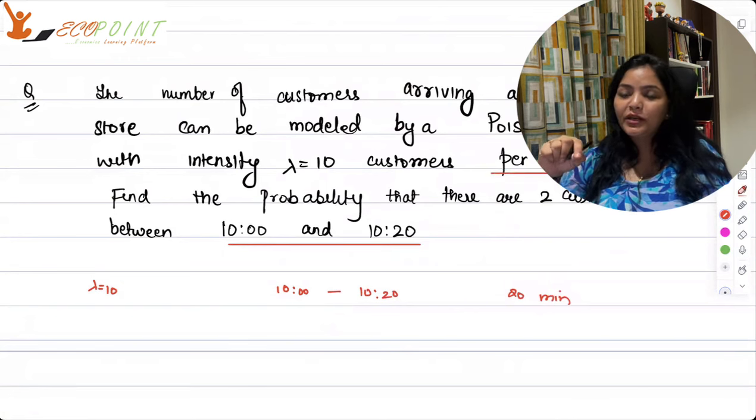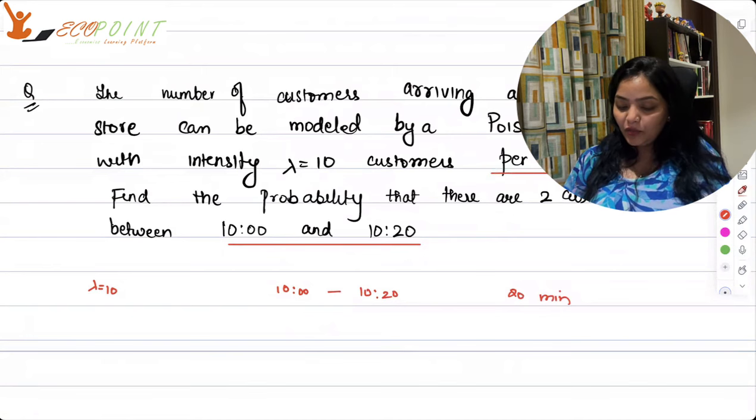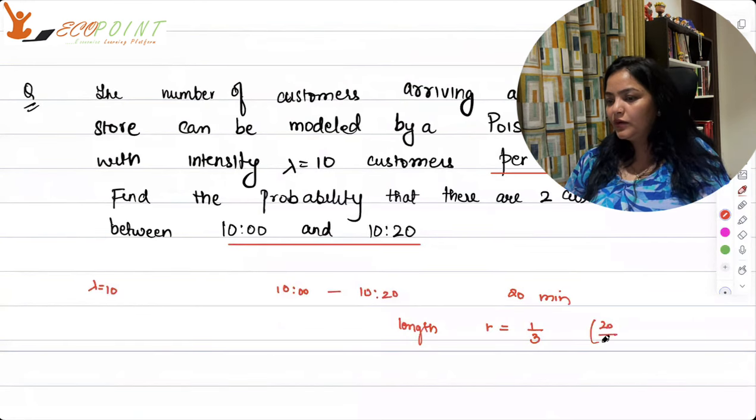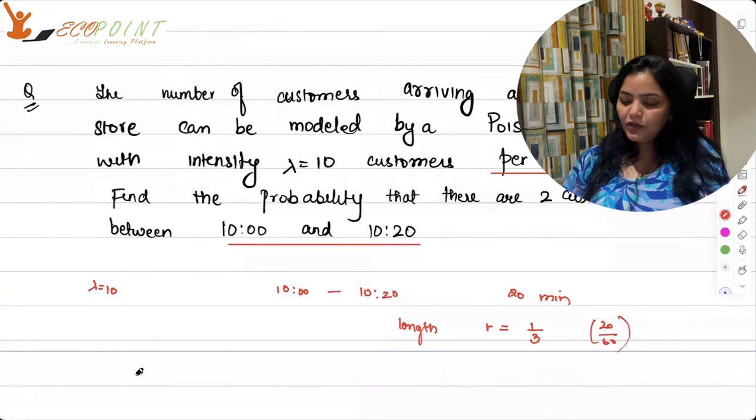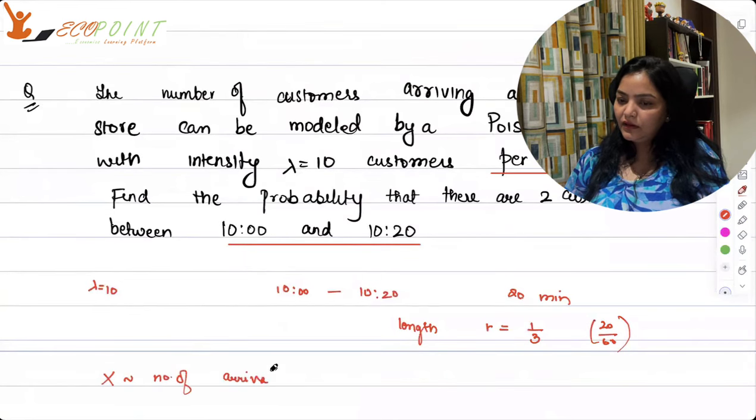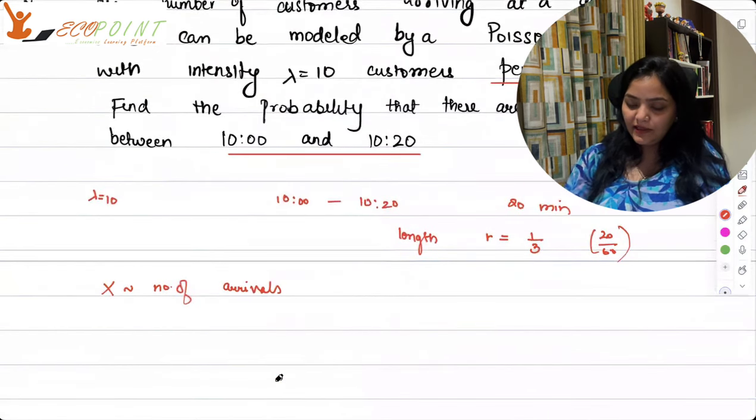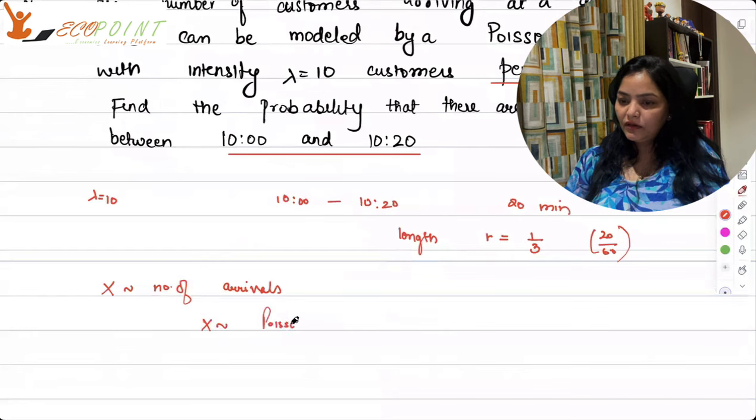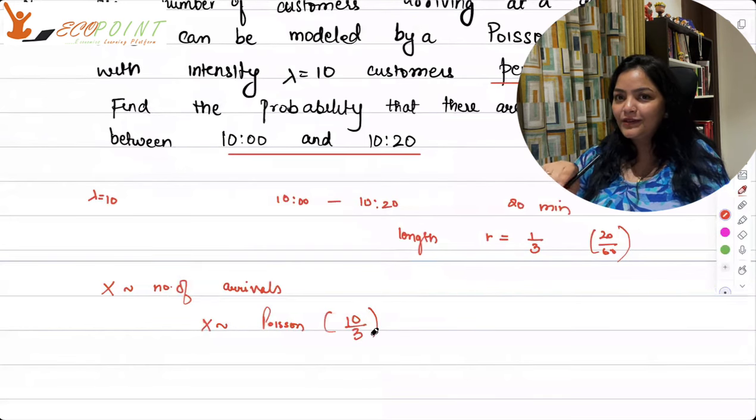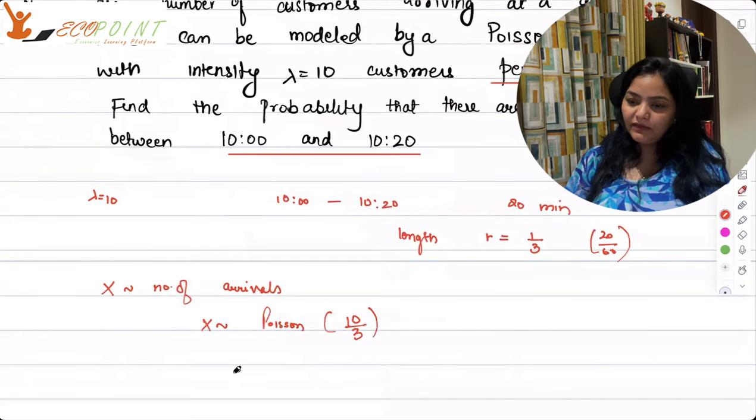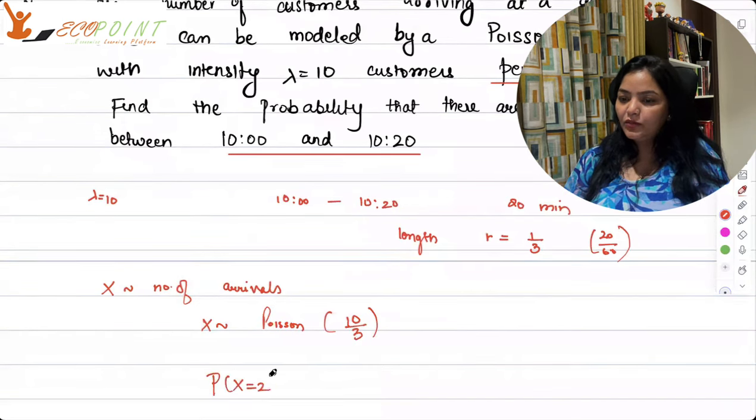The rate that has been given to us is per hour. Per hour rate. So I have to take 20 minutes. That is why I will have to make that conversion. So what I would require, our length, that will be, let's take it as rho again. So that will be 1 by 3, which is basically 20 out of 60. So 1 by 3. X is again number of arrivals. Since I want the number of arrivals in this interval, X is Poisson with which parameter? Not lambda equals to 10, but instead what will be 10 by 3.